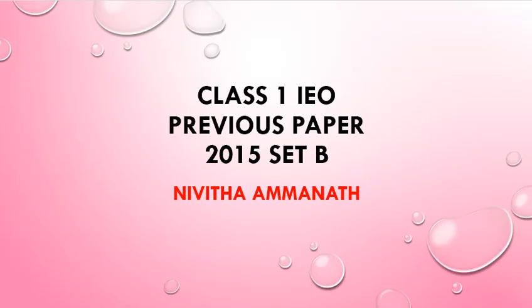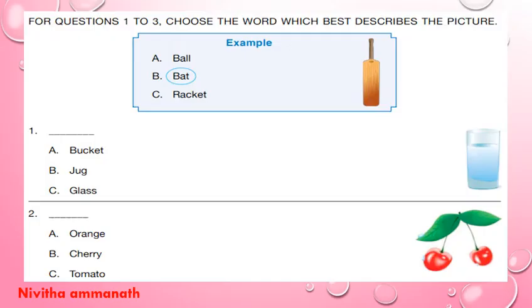Welcome to my channel Teaching and Learning Fun. Today we will be looking at Class 1 IEO Olympiad 2015 Set B paper. For questions 1, 2, 3, choose the verb which best describes the picture.